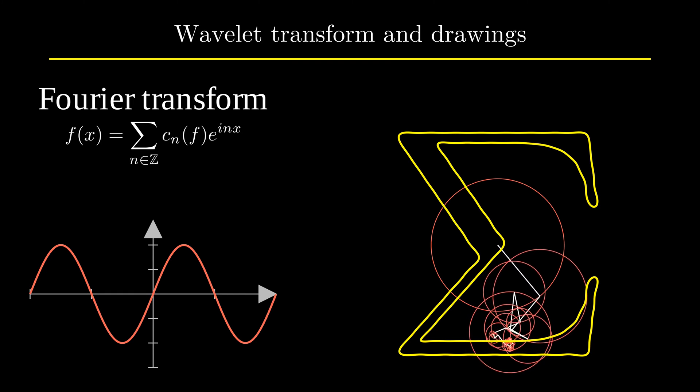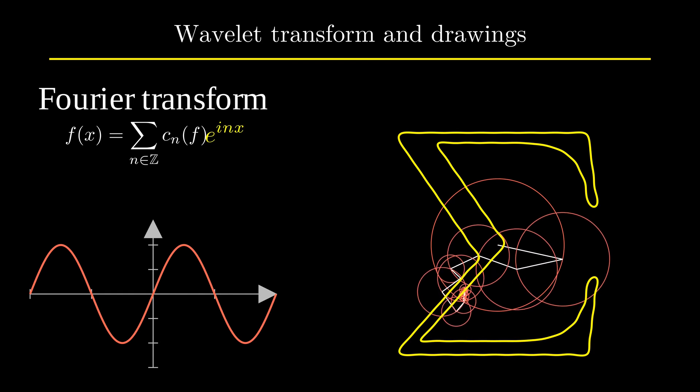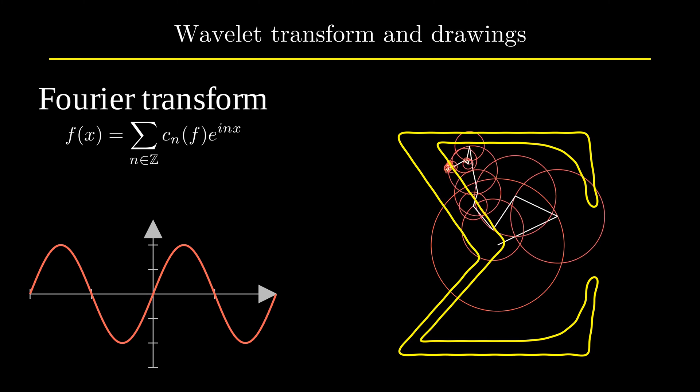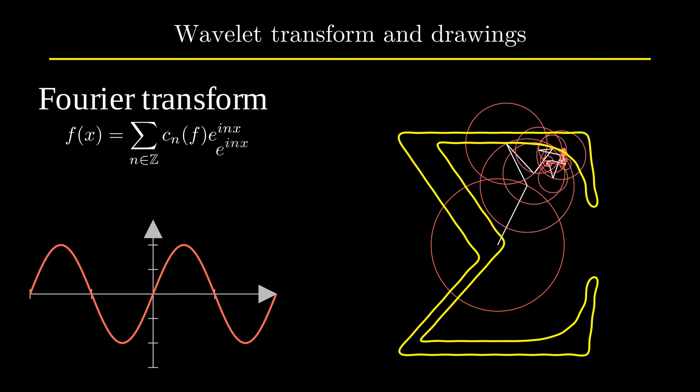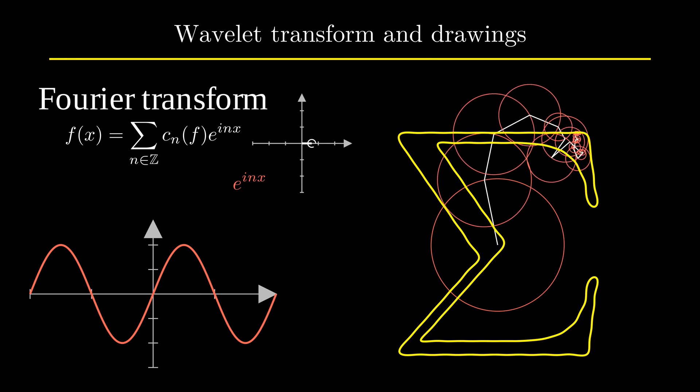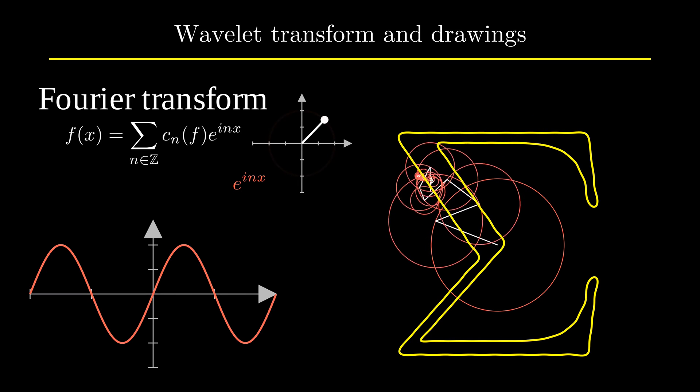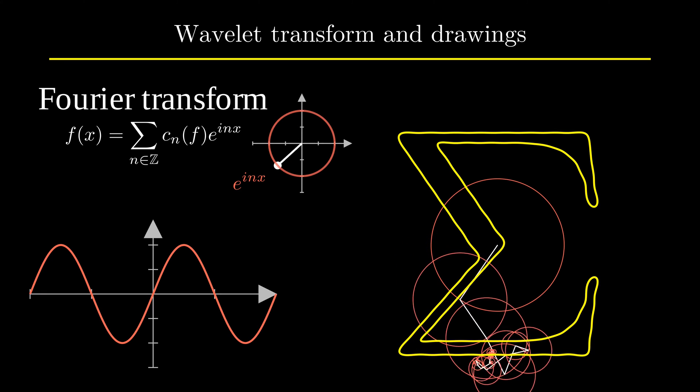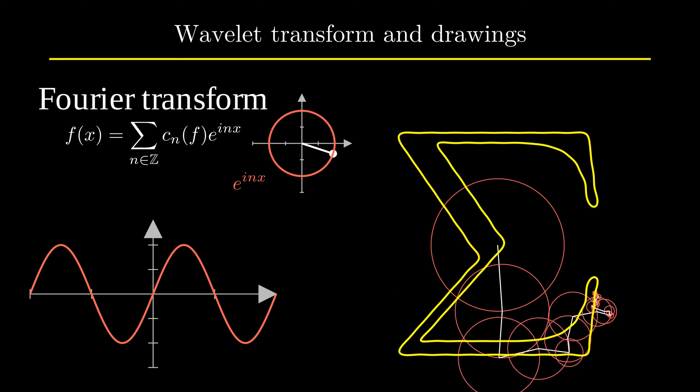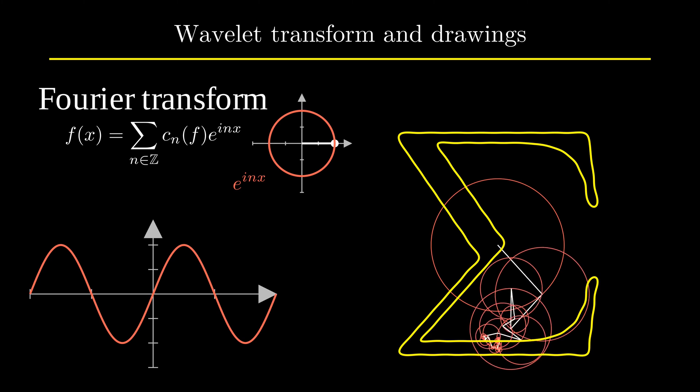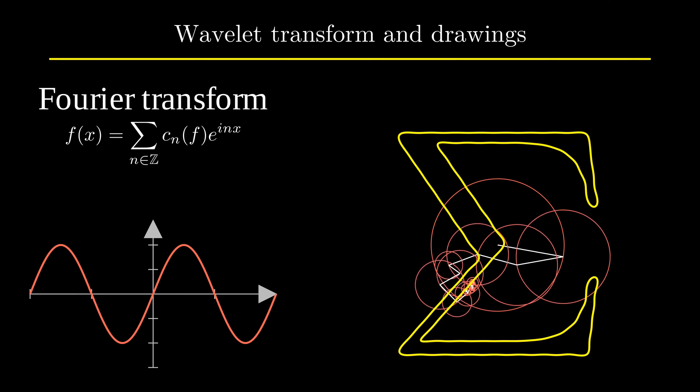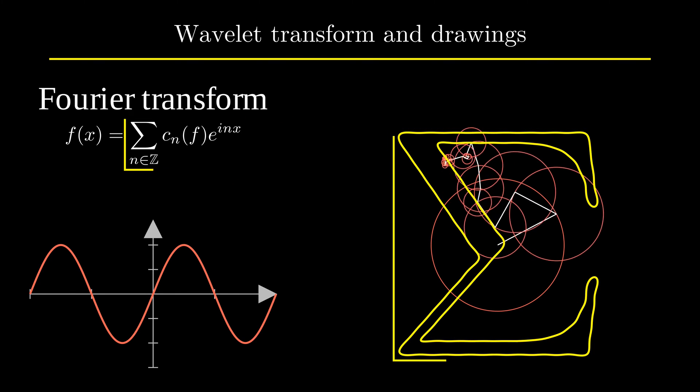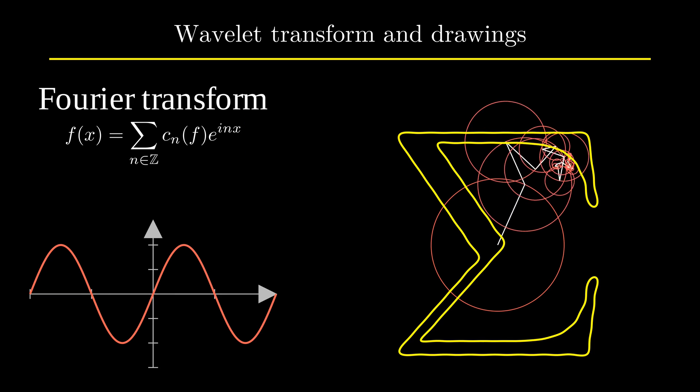As you can see, the formula is a sum of complex exponentials. The function of the real x, exponential ix, draws a circle in the complex plane. Therefore, the complete formula, which is a sum of complex exponentials, represents a sum of rotating vectors.